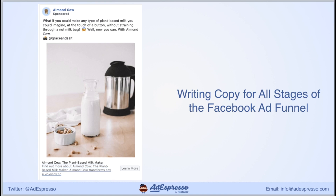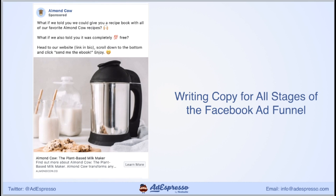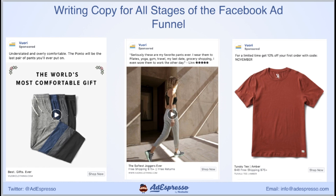The second Almond Cow ad says: 'What if we told you we could give you a recipe book with all of our favorite Almond Cow recipes? What if we also told you it was completely 100% free? Head to our website, scroll down to the bottom, and click send me the ebook.' This campaign is not useful to users who have never seen the original campaigns and don't know who Almond Cow is — it's a fantastic lead generation campaign designed to drive people to a lead magnet, but you need to follow it up after an initial brand awareness campaign or target a warmer audience already familiar with you.